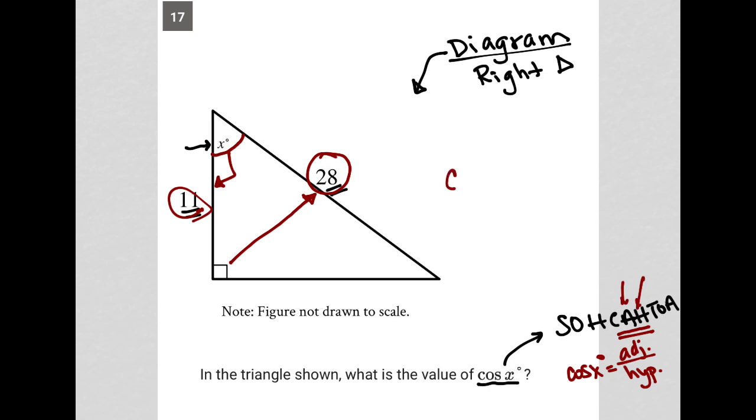So very simple, very straightforward. Cosine x is therefore equal to the adjacent, which is 11, divided by the hypotenuse, which is 28. And there's our answer. We can just literally bubble in 11 over 28. That's how I would do it.